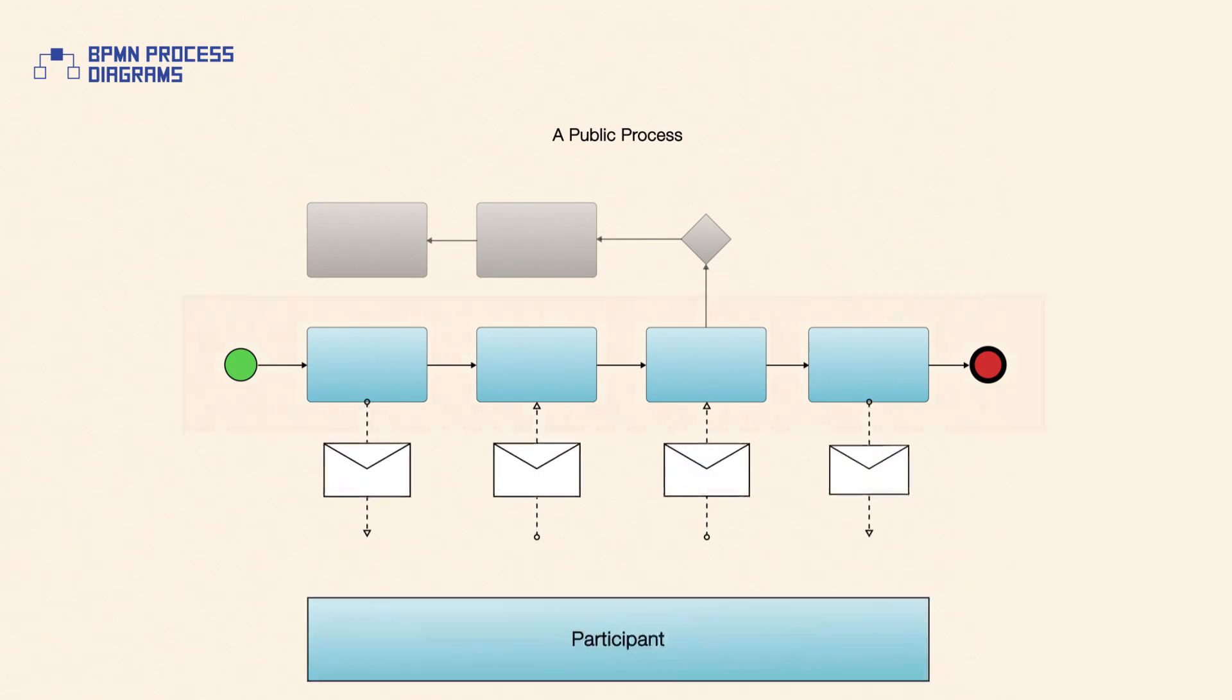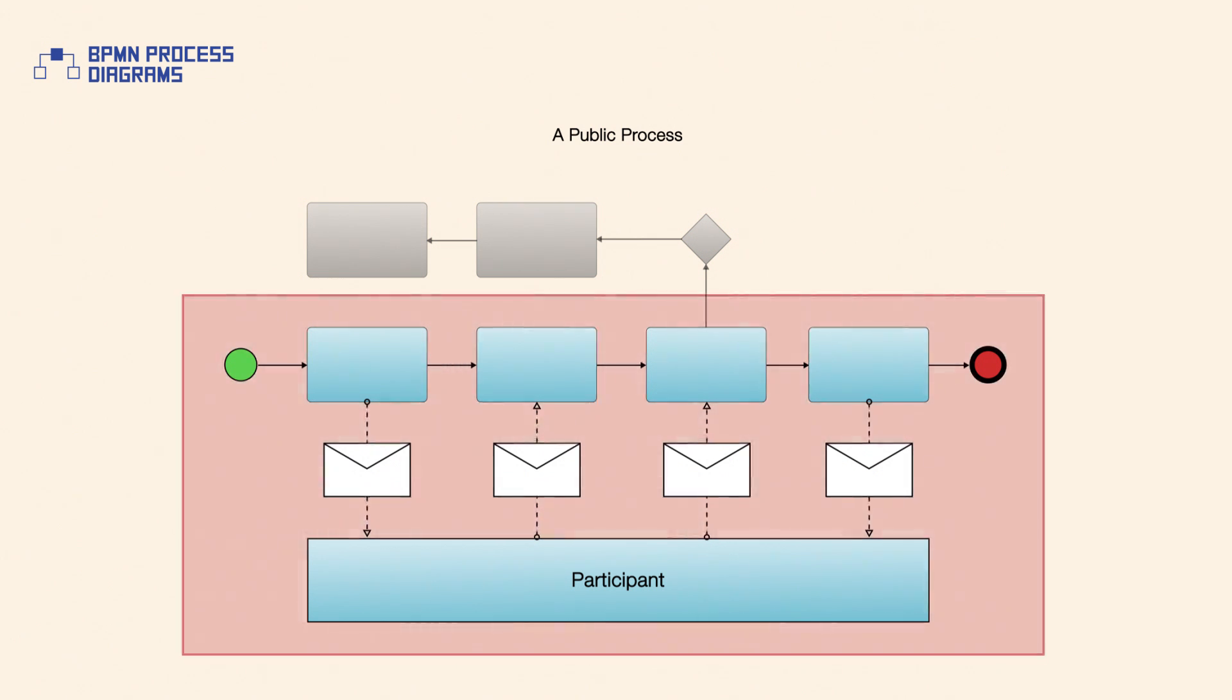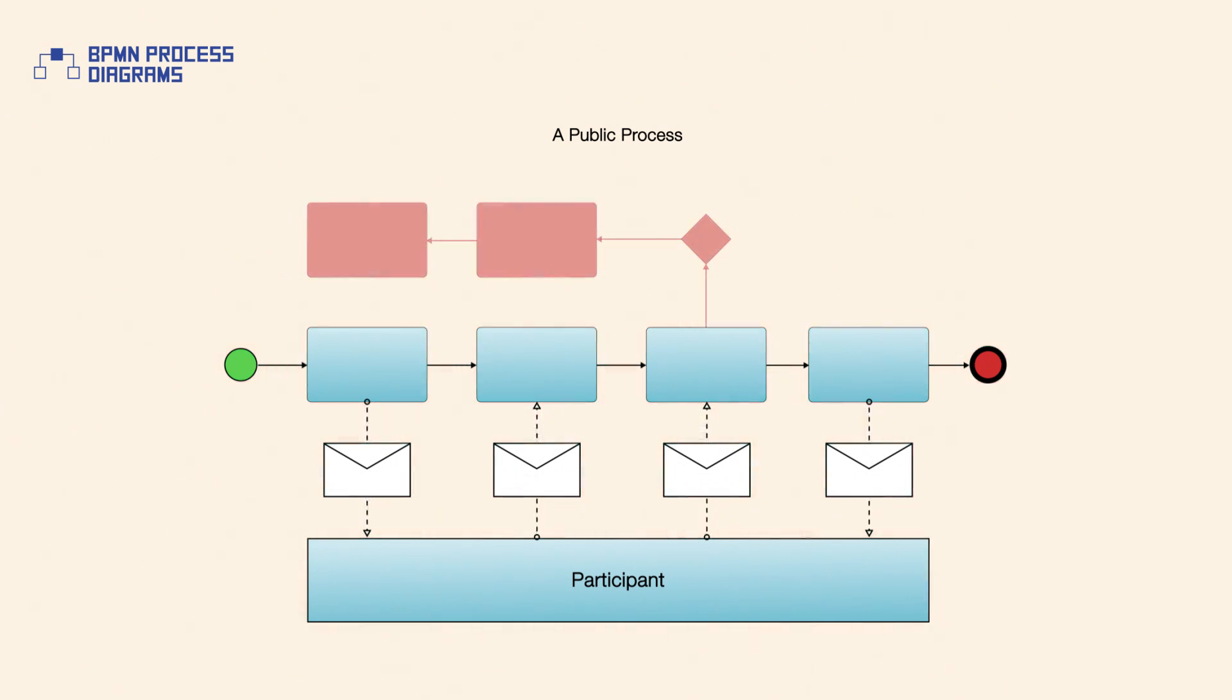A public process represents the interactions between a private business process and another process or participant. A public process includes an ordered set of only those activities that are used to communicate to the other participant. This means that all other internal activities of the private business process are not shown in the public process.